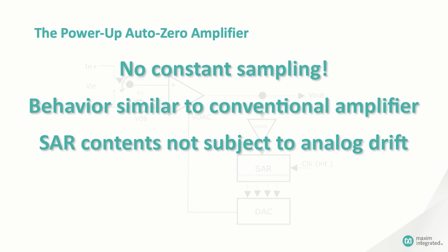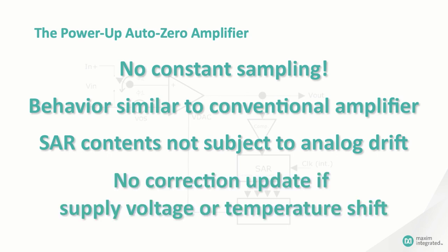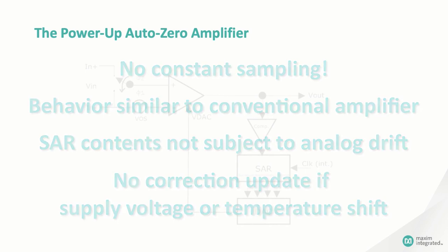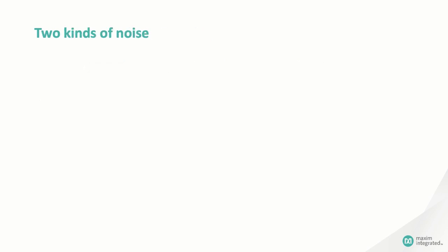Now, the great thing about a power-up auto-zero amplifier is that you don't have to constantly sample and correct the input offset. It behaves just like an uncompensated amplifier in use because the compensation is done just that one time at power-up. The contents of the SAR are digital, so they don't degrade over time, and they remain valid until power is removed. The only real issue with the power-up auto-zero amplifier is that you can't continuously correct for changes in temperature and supply voltage, and, of course, you still have to deal with issues like 1 over f noise.